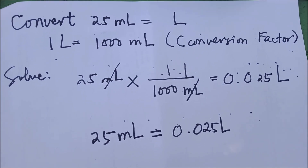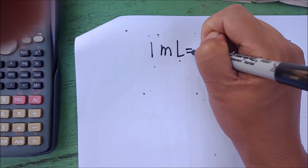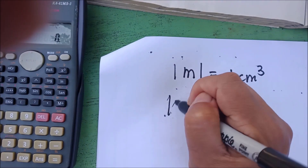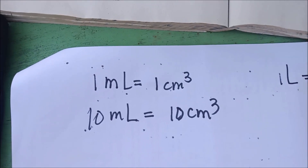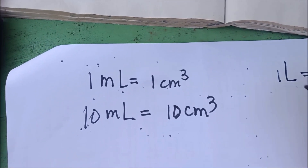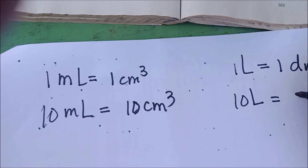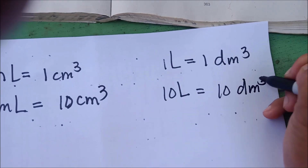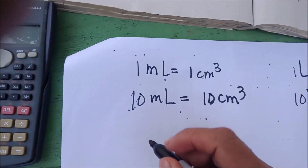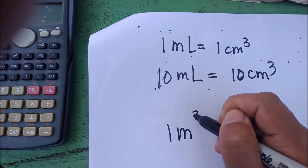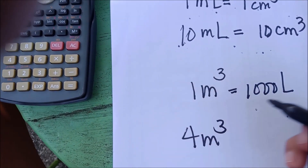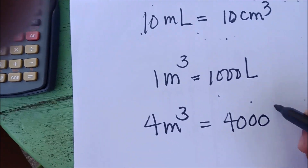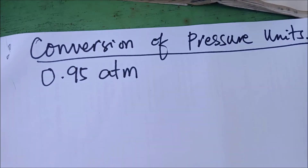Another example: since 1 mL equals 1 cubic centimeter, therefore 10 mL is the same as 10 cubic centimeters. Since 1 liter equals 1 cubic decimeter, therefore 10 liters equals 10 cubic decimeters. If you are given 10 cubic decimeters, using the conversion factor that 1 cubic meter equals 1000 liters, then 4 cubic meters equals 4000 liters.